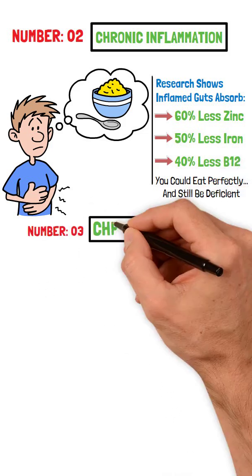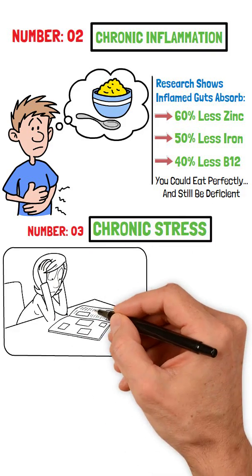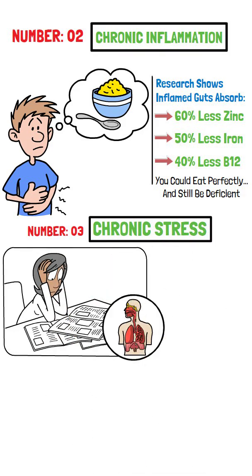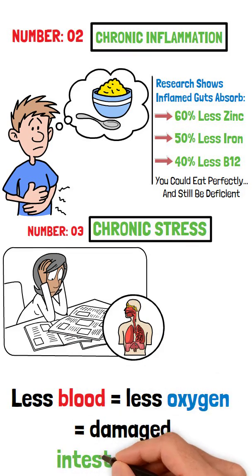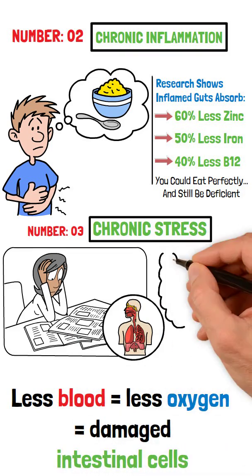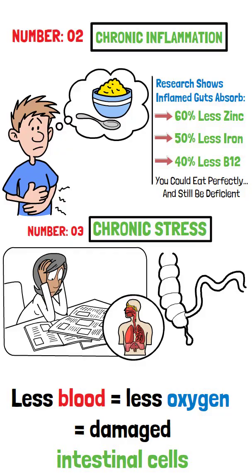Number 3: Chronic Stress. Stress pulls blood away from digestion. Less blood equals less oxygen equals damaged intestinal cells. Chronic stress literally thins your gut lining.